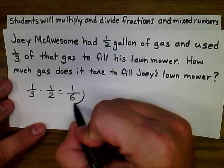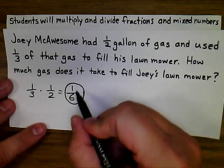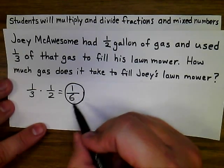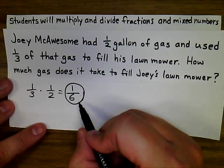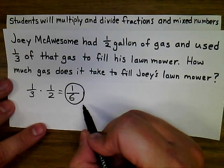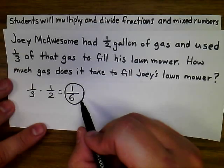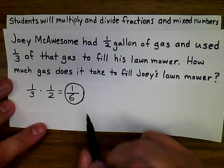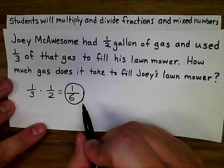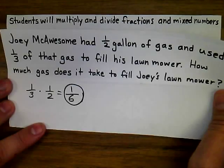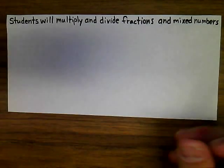In this case, your numerator and denominator have no common factors other than one, so your final answer is one-sixth. It takes one-sixth of a gallon of gas to fill Joey's lawnmower.